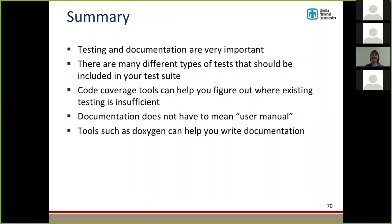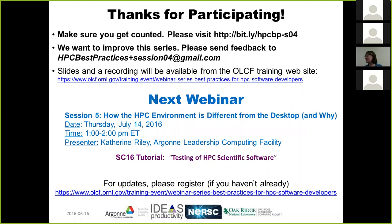In summary, testing and documentation are very important. There are many different types of tests that you should include in your test suite. Make sure not to have all system-level tests — you need at least some unit tests to tell you what's going wrong. Code coverage tools can help you figure out where existing testing is insufficient. Documentation doesn't have to mean a user manual — there can be many different types, and there are tools like Doxygen to help you generate it. For Fortran coverage support, a URL was posted in the Google Doc and in the webinar chat.